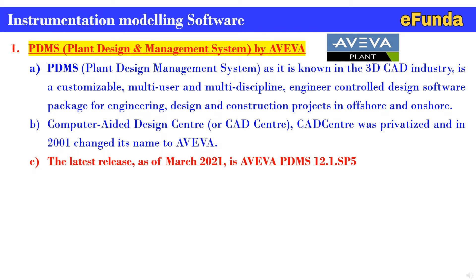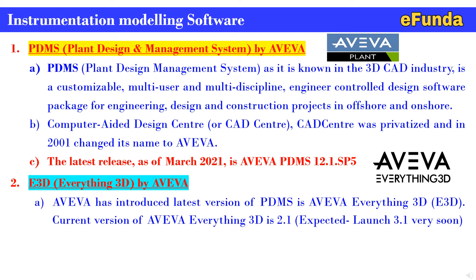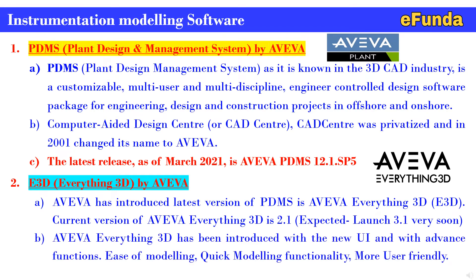The second software is E3D — Everything 3D — by Aveva. Aveva has introduced the latest version of PDMS called Aveva Everything 3D, or E3D. One can see the logo: Aveva Everything 3D. The current version of Aveva E3D is 2.1, with version 3.1 expected to launch very soon. The Aveva Everything 3D has been introduced with an updated UI and advanced functions — ease of modeling, quick modeling functionality, and a more user-friendly interface.